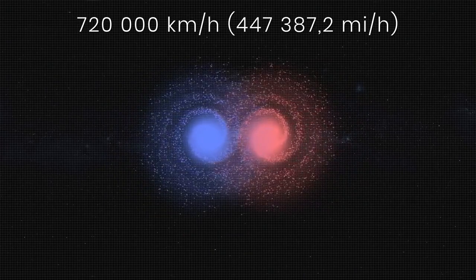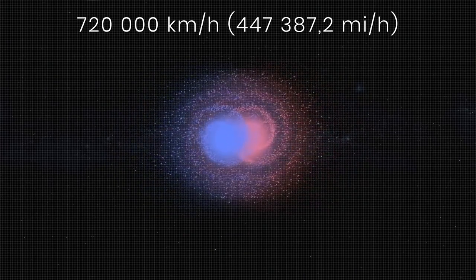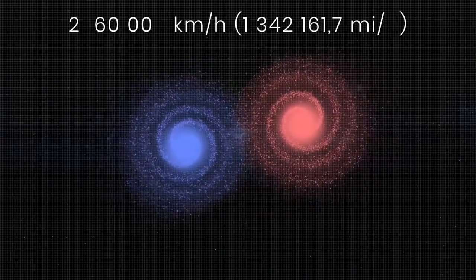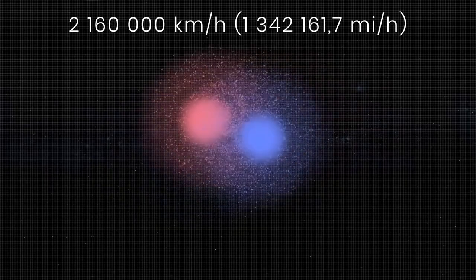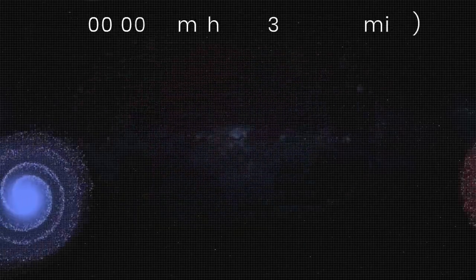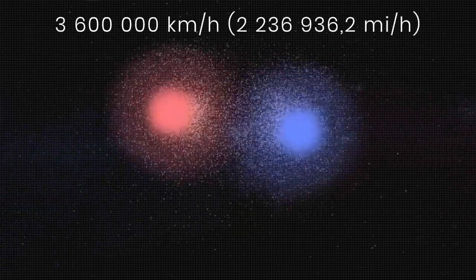If at a speed of approach of 200 kilometers per second, the galaxies most often merge, and at 600, they pass through each other. Then, at speeds above 1,000 kilometers, the consequences will be fatal.